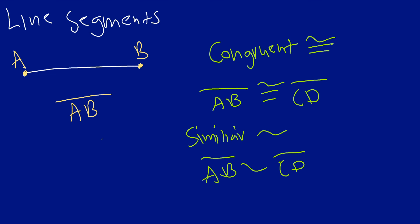Line segments have two endpoints — a start and an end — and that is how you are able to measure them; a line segment is a finite space in one dimension. Lastly, congruent means exactly the same shape and size, and similar means the same shape but possibly different sizes. Thank you so much for listening — I'll see you in the next video. My name is Darren Thomas, director of Educational Research Techniques. Take care.